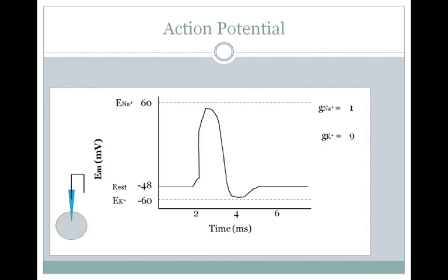This shape should look very, very familiar to you — this is an action potential. We often talk about a couple of phases of the action potential: the rising phase, when the membrane potential is going towards the equilibrium potential of sodium; the falling phase, when the membrane potential is falling back towards rest; and the hyperpolarization phase or undershoot phase, where the membrane potential is more negative than normal.